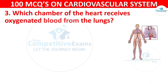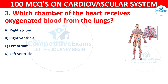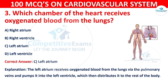Q3. Which chamber of the heart receives oxygenated blood from the lungs? Options are: right atrium, right ventricle, left atrium, or left ventricle. The correct answer is C — left atrium. The left atrium receives oxygenated blood from the lungs via pulmonary veins and pumps it into the left ventricle, which then distributes it to the rest of the body.